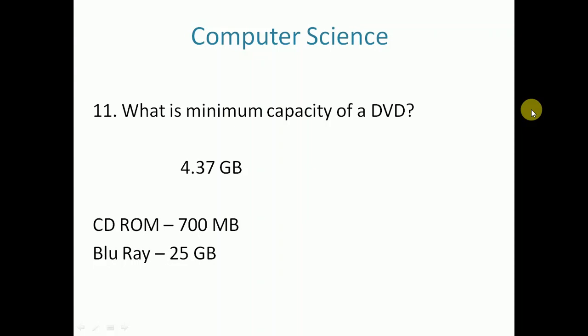11th question: what is the minimum capacity of a DVD? The answer is 4.37 GB. Minimum capacity of a CD-ROM is 700 MB. Minimum capacity of Blu-ray disk is 25 GB.